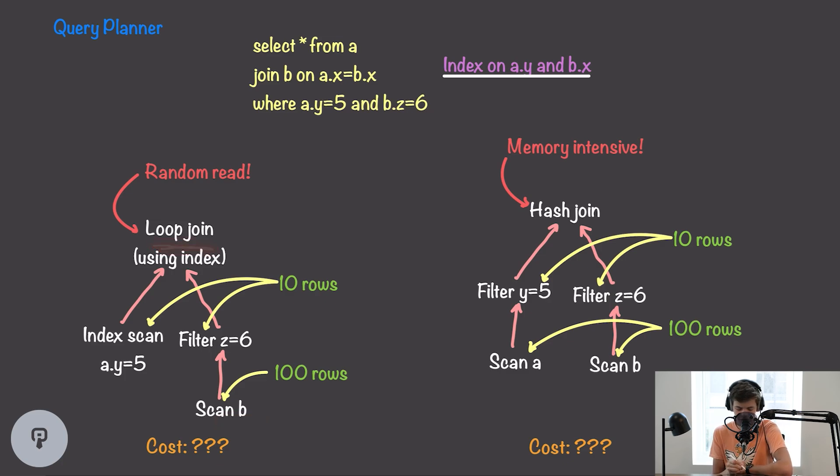What this loop join is essentially going to do is loop over every single record that we get from table a, and then use the index to quickly find the corresponding record in table b. So, this is clearly a much faster operation, and it's therefore going to have a lower cost. We only have to deal with the 10 records that we get out of this index instead of having to scan the entire a table. And when we're doing our join, we don't have to deal with this memory intensive operation, and we don't have to scan through both tables. It's worth noting, however, that this loop join using the index is going to result in random reads from our disk.